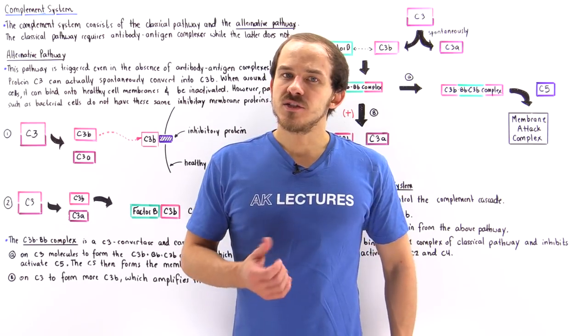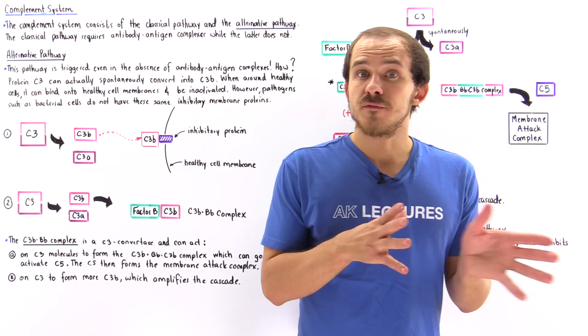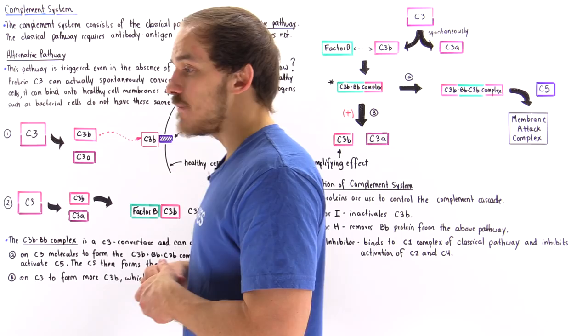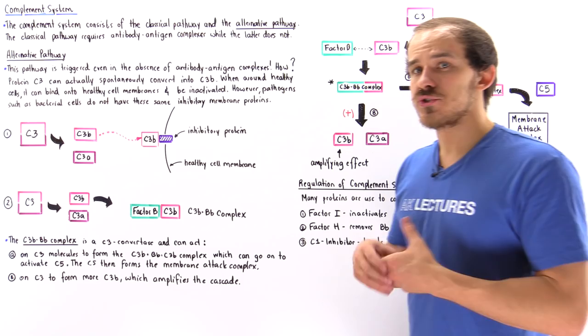As we discussed previously, the complement system actually consists of two different major pathways. We have the classical pathway that we focused on previously, and we have the alternative pathway that we're going to focus on in this lecture.